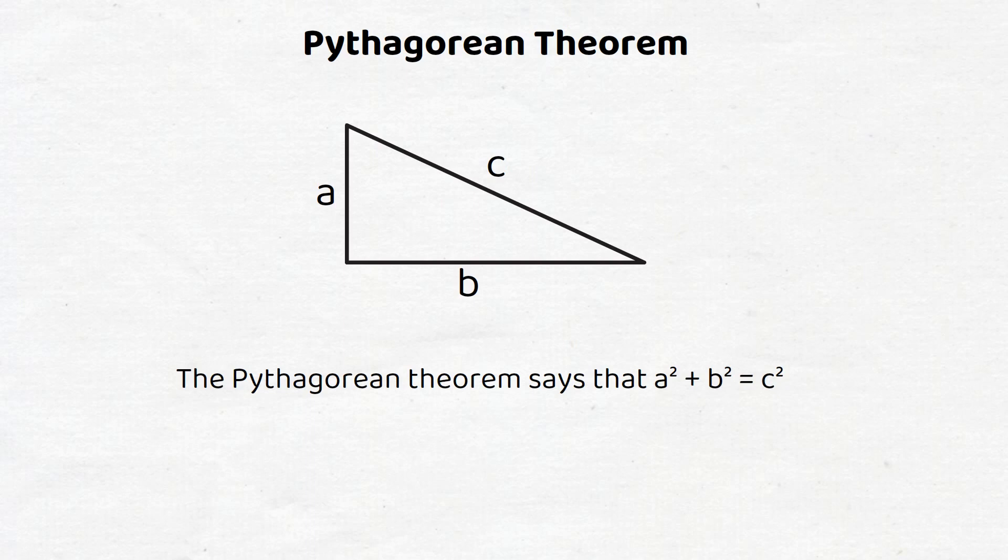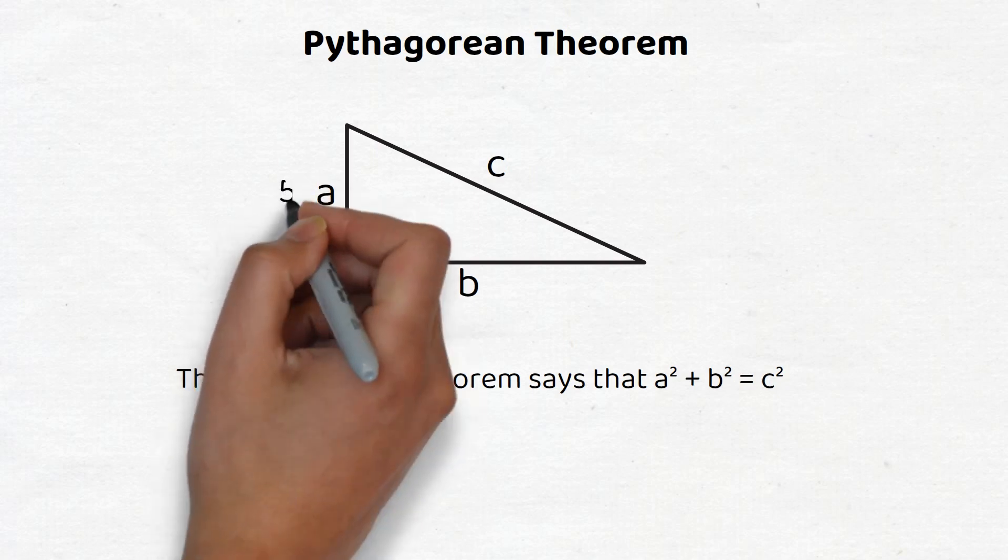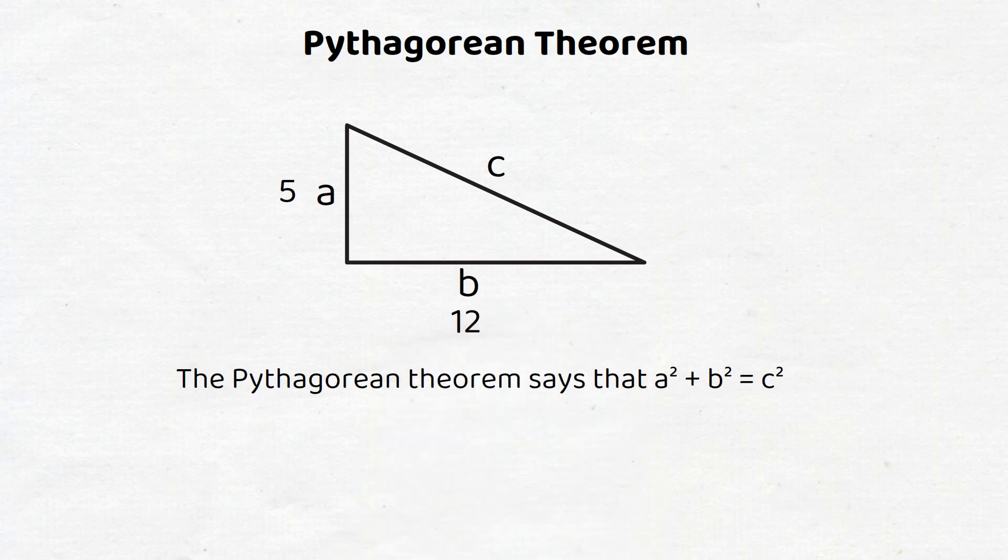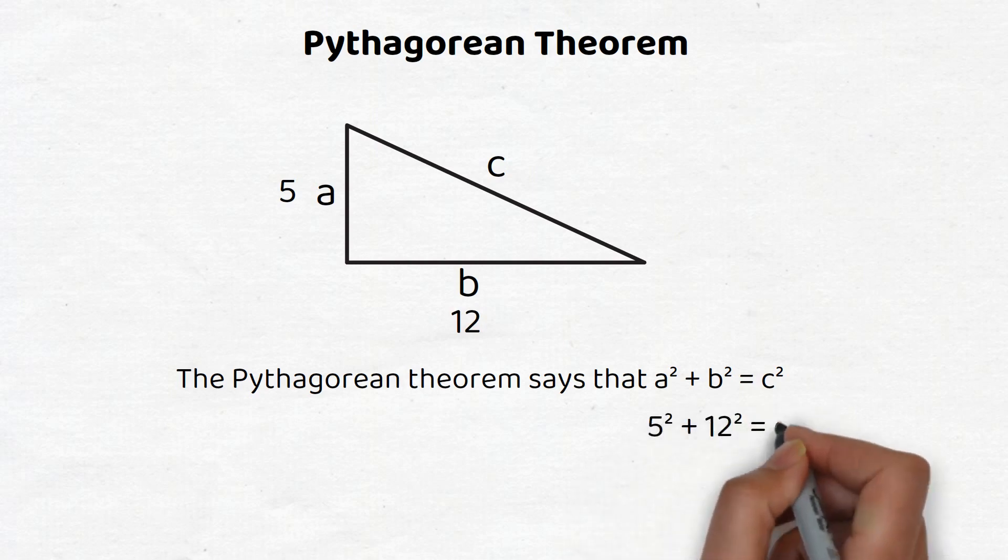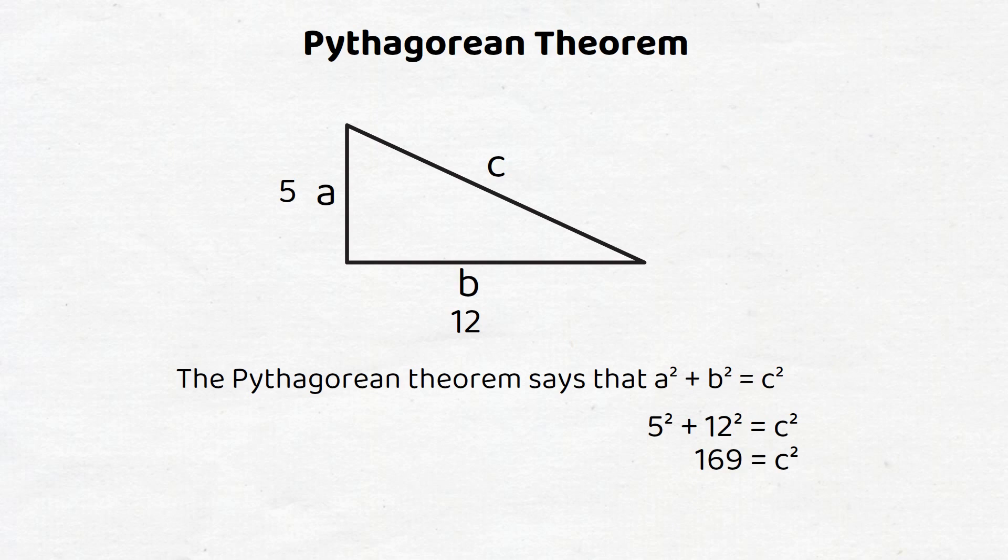For example, if the two smaller sides of a right triangle are 5 and 12, then the longest side, or c, will satisfy the formula a squared plus b squared equals c squared, so 5 squared plus 12 squared equals c squared. The left-hand side adds up to 169, so 169 equals c squared, from which it follows that c equals 13. Thus, the longest side is 13.